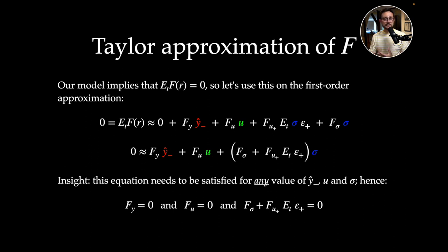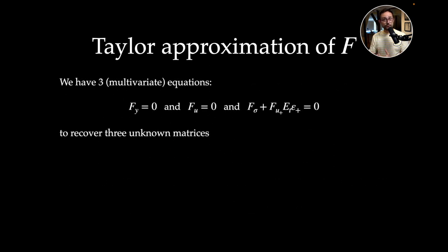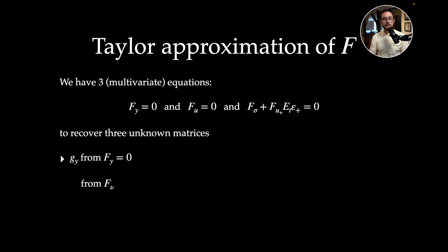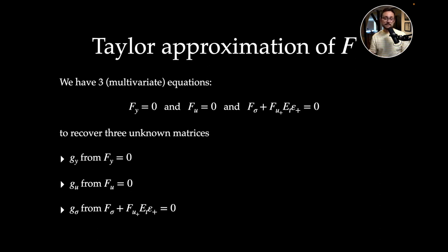We have three multivariate equations — fy = 0, fu = 0, and f_sigma + fu+ times the first product moment = 0 — and we're looking for three unknown matrices. There is a natural connection: it is possible to recover gy from fy = 0, gu from fu = 0, and g_sigma from the last multivariate equation. Let's start with recovering g_sigma.